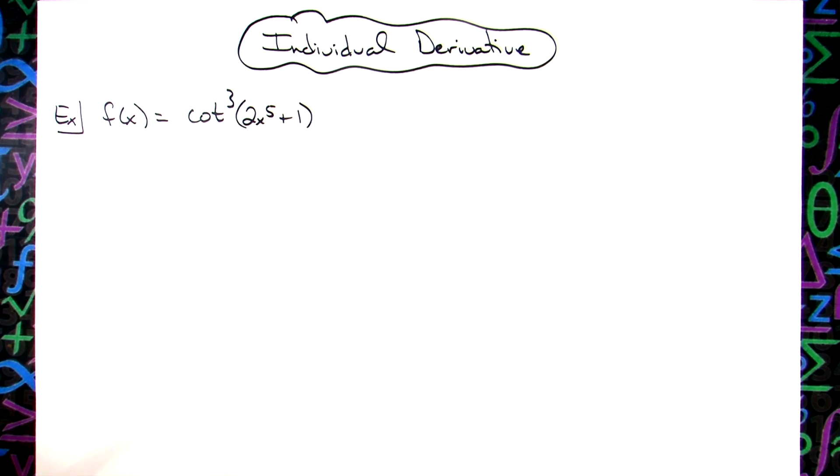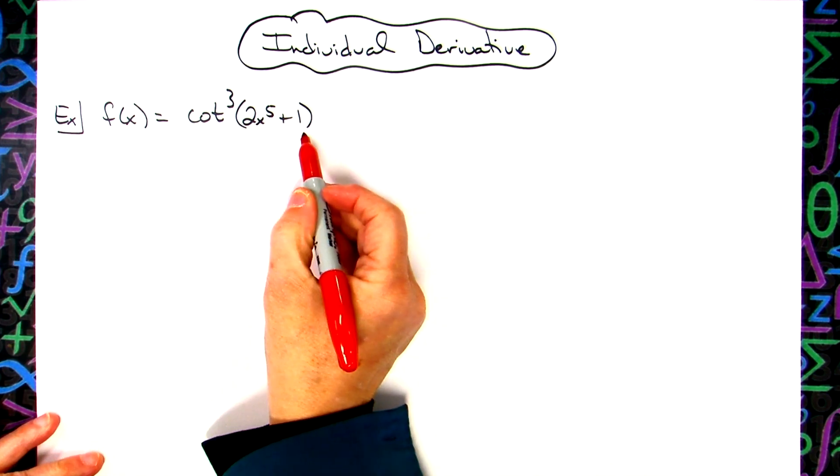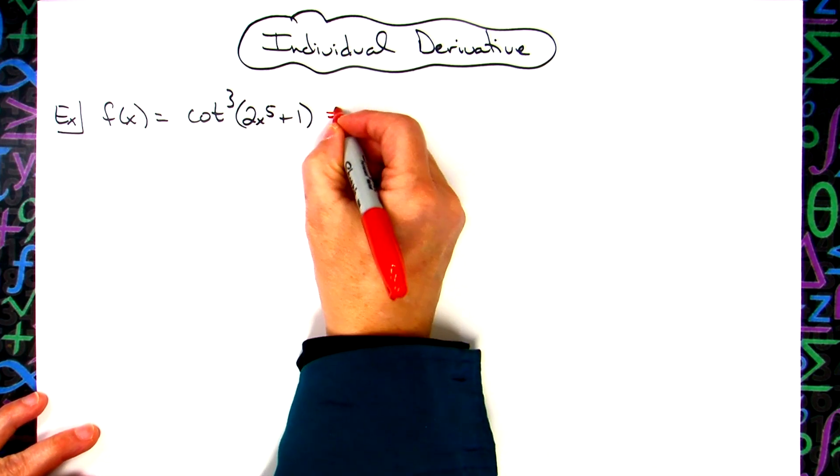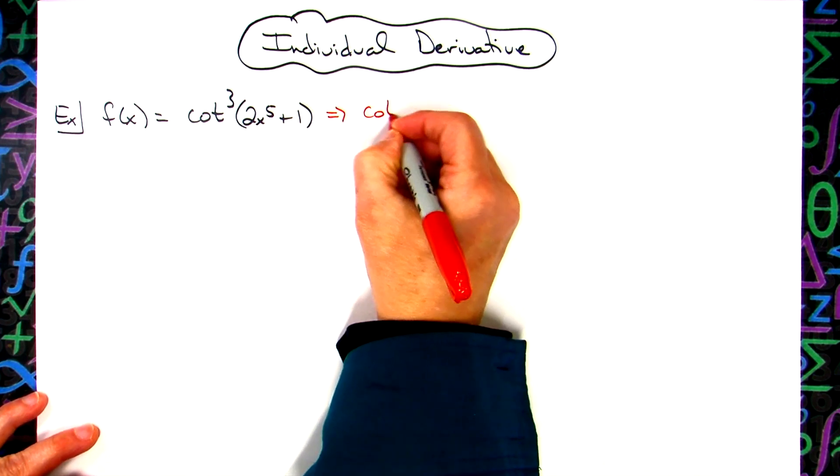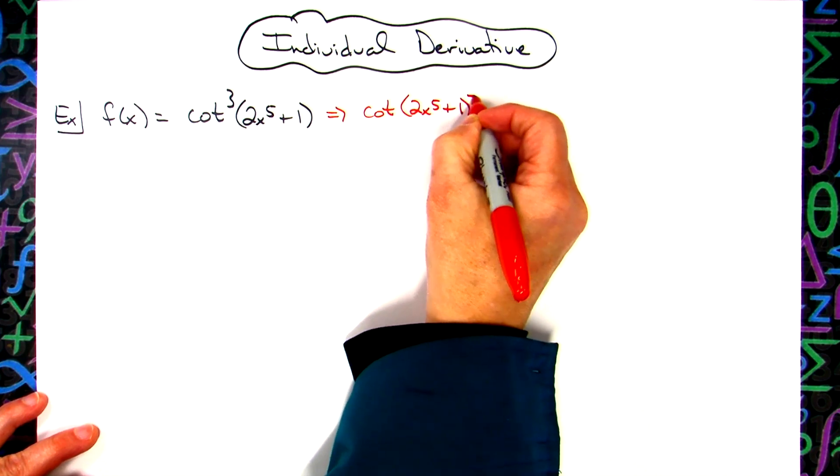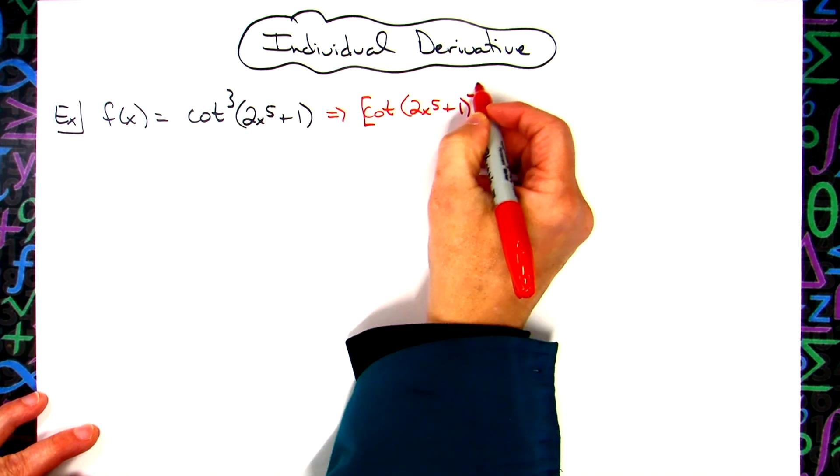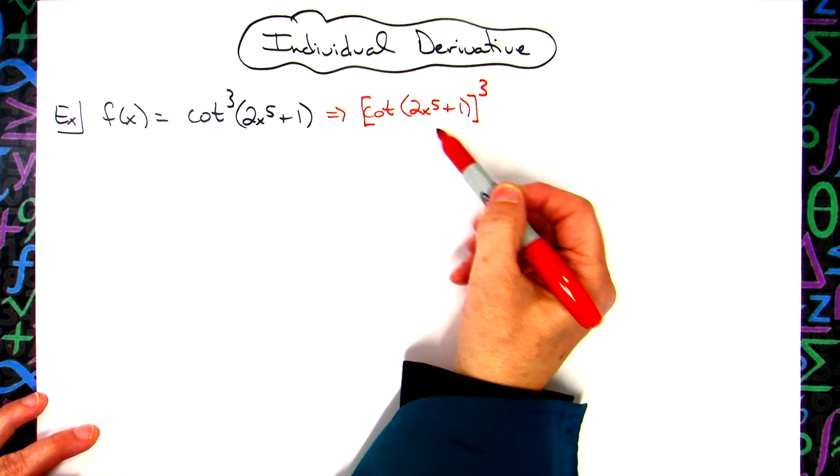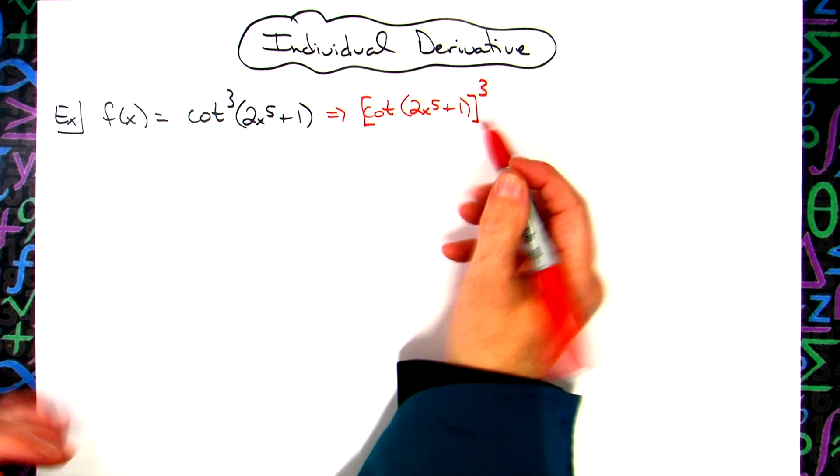First thing I'm going to do before I start this is to rewrite this original function, just so that we can more clearly see that we have something raised to the third power. So I'm going to rewrite this as the cotangent of 2x to the fifth plus one, and then all of that raised to the third power. Sometimes that makes it easier to see that we have an inside function, and then our outside function is something being raised to the third power.